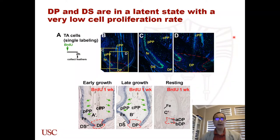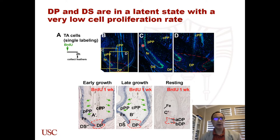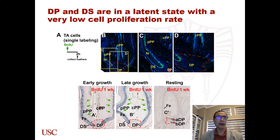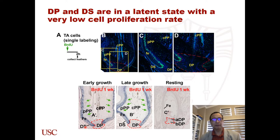When we labeled the chicken with BrdU for two hours and collected the feather, we found that cell proliferation happened in the epidermis and in the pulp. We barely found cell proliferation in the dermal papilla and dermal sheath. Even when we labeled the chicken with BrdU for one week, we still could not find many proliferating cells in the dermal papilla or dermal sheath.